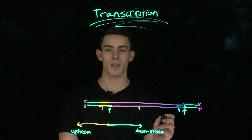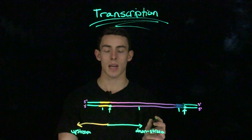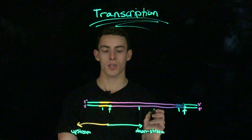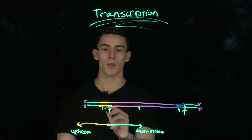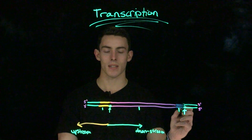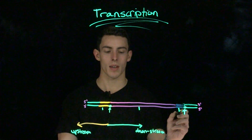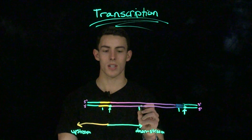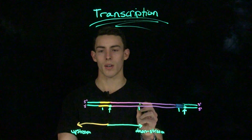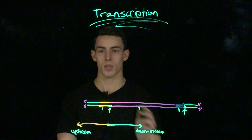Let's talk about points in the transcription unit in reference to each other. For example, the RNA-coding region is downstream to the promoter. However, the promoter is upstream to the termination site. Likewise, the terminator is downstream to the RNA-coding sequence, but the RNA-coding sequence is upstream to the transcription start site.